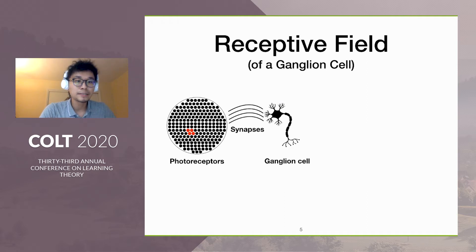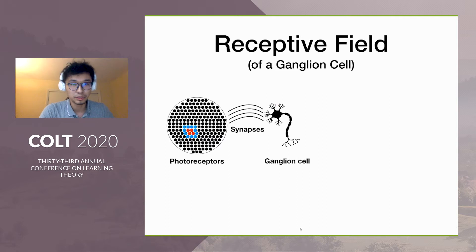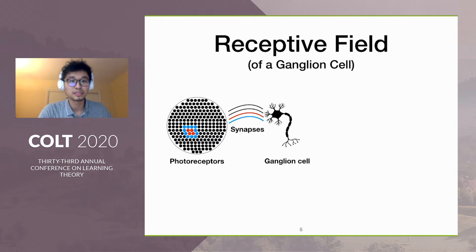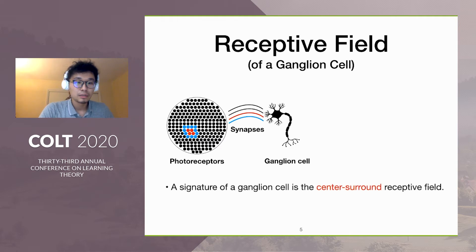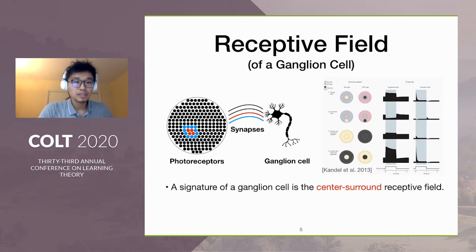On the other hand, if the ganglion cell got inhibited, then those photoreceptors are called the inhibited receptive field, marked as blue here. The information of receptive field will be encoded in the synapse. Now let us try to explain the compression phenomenon with the concept of receptive field.